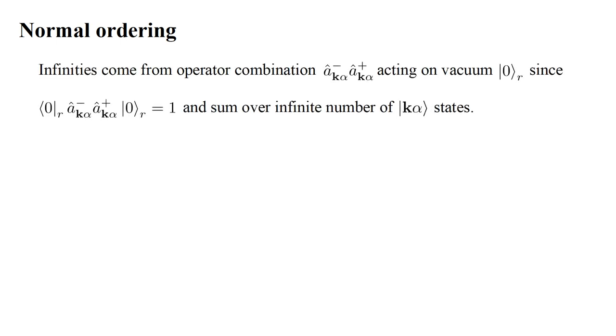The infinities we have encountered so far can be dealt with by a trick called normal ordering. Both the infinite zero-point energy of the electromagnetic field and the infinite self-energy of the electron come from the operator combination a-hat minus a-hat plus for a given photon mode, acting on the vacuum state. Because the expectation value of this is one, and this is then summed over the infinite number of photon modes.